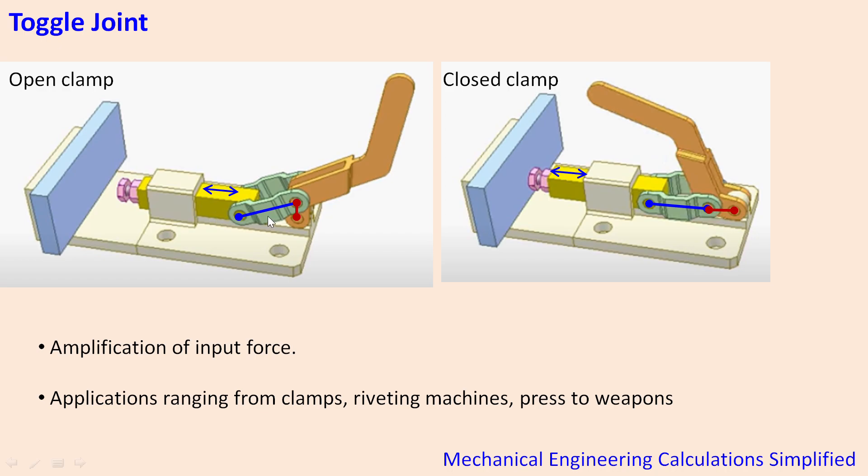Now what happens is in initial condition this is the unclamped condition or open condition where the two links are at an angle with each other. When you push this particular lever towards the clamp it closes the clamp as you can see in the right side picture it has closed the clamp.